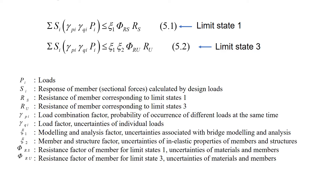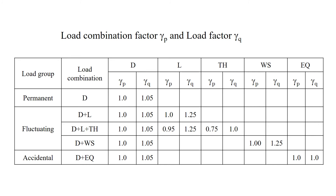The right side is the resistance, R-S and R-U, which include the modeling and analysis factor γq1, considering uncertainties associated with bridge modeling and analysis; the member and structural factor γq2, considering uncertainties of inelastic properties of members and structures; and the resistance factor, considering uncertainties of materials and members. This table shows the load combination factor γp and the load factor γq for different design loads.